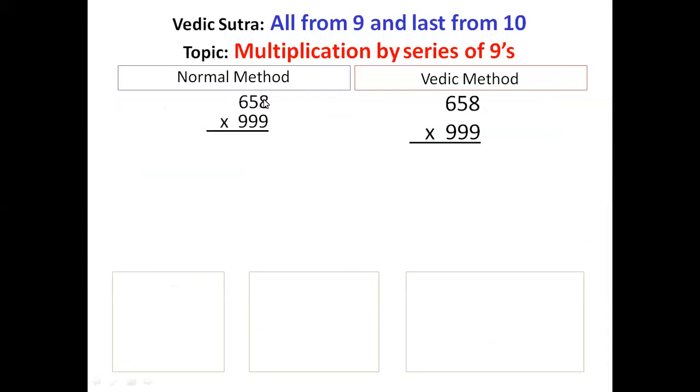First, let's compare normal method with Vedic method. The same problem we are taking for both: 658 multiplied by 999. With normal method of multiplication, this is how we'll have to do calculation. You can see that it is very lengthy.